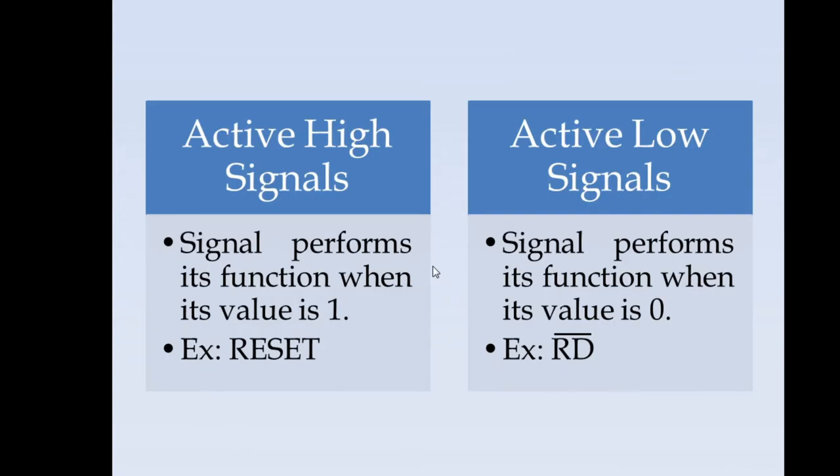Generally speaking these signals can be active high or active low. Active high signals indicate the signal performs its function when its value is 1, for example reset. Reset operation will happen when this signal is high. In the case of active low signal, the functionality is performed when that signal value is 0. For example read bar, it is indicated by a bar over the signal. It indicates the read functionality will happen whenever the signal goes low.